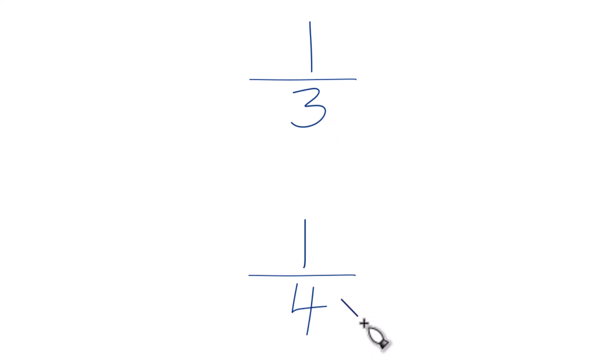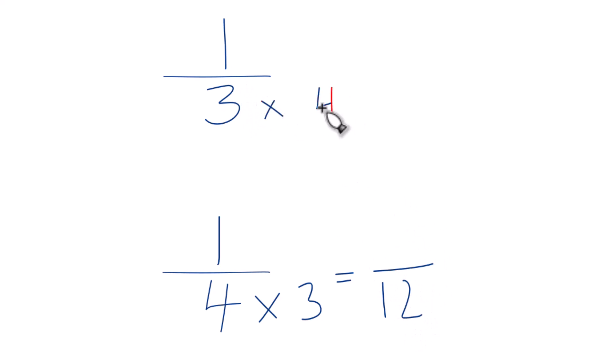I could just multiply 4 times 3 because that would give me 12. And then I could multiply 3 times 4 because that would give me 12. So now I have 12 in the denominator on both of these fractions, 1 third and 1 fourth.